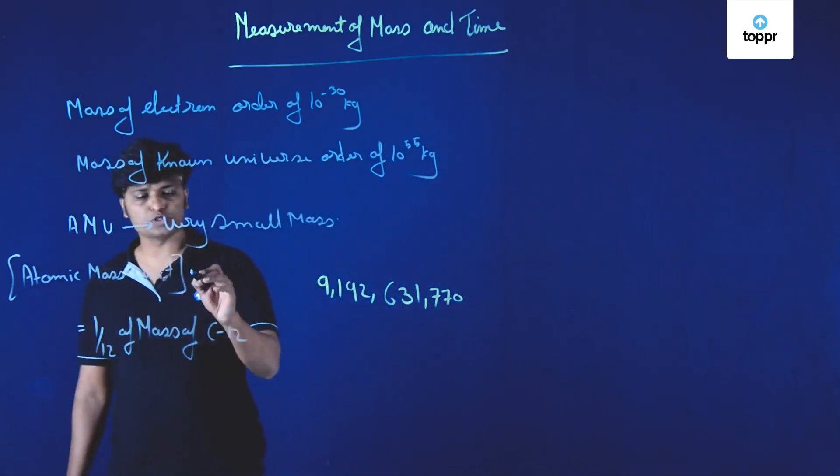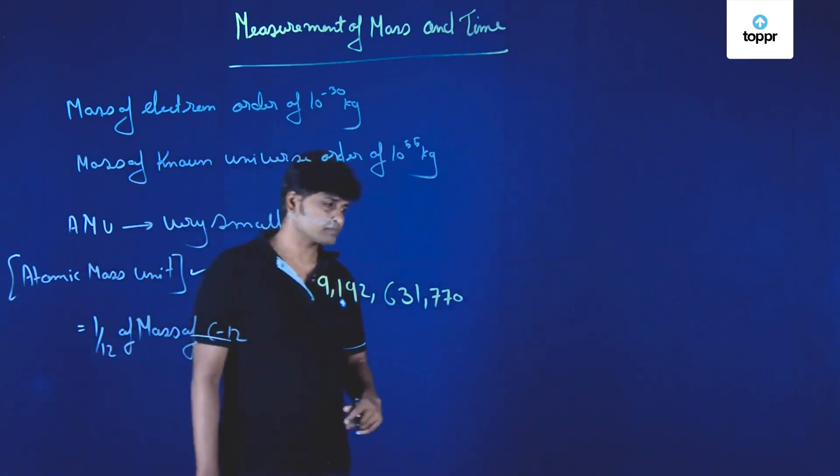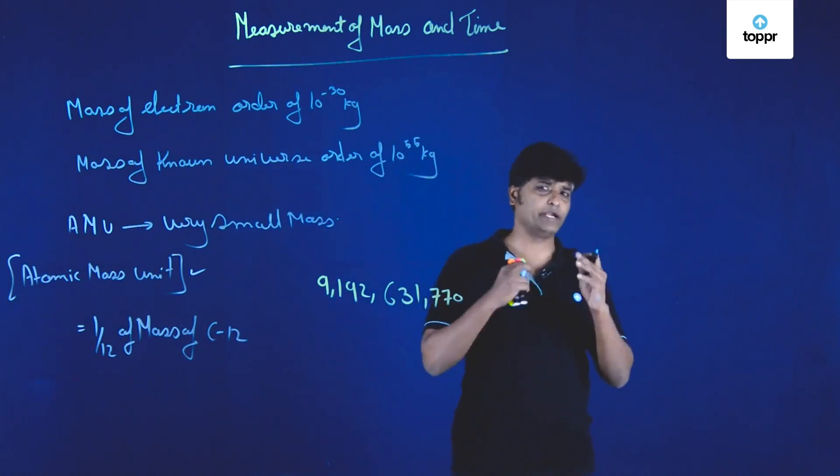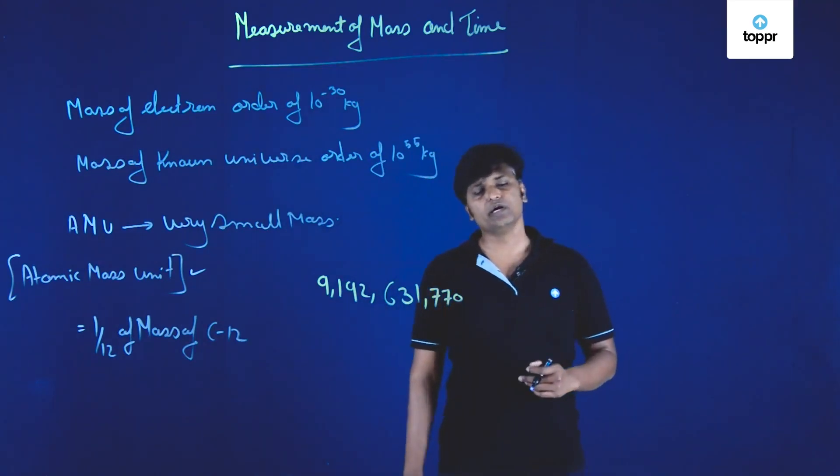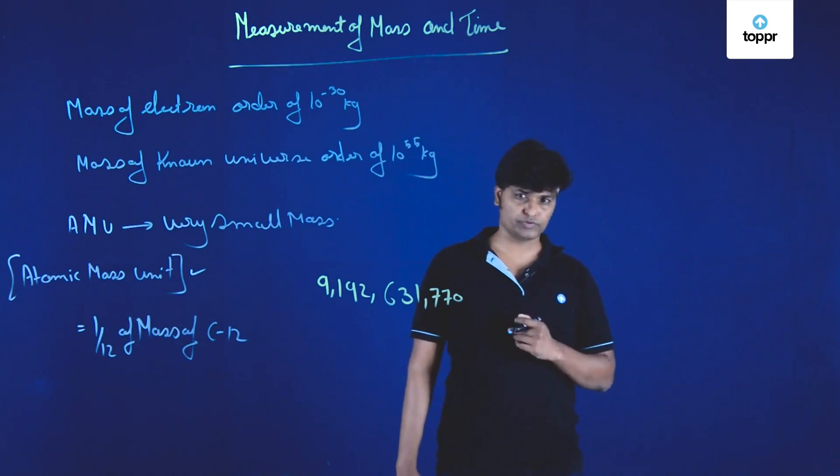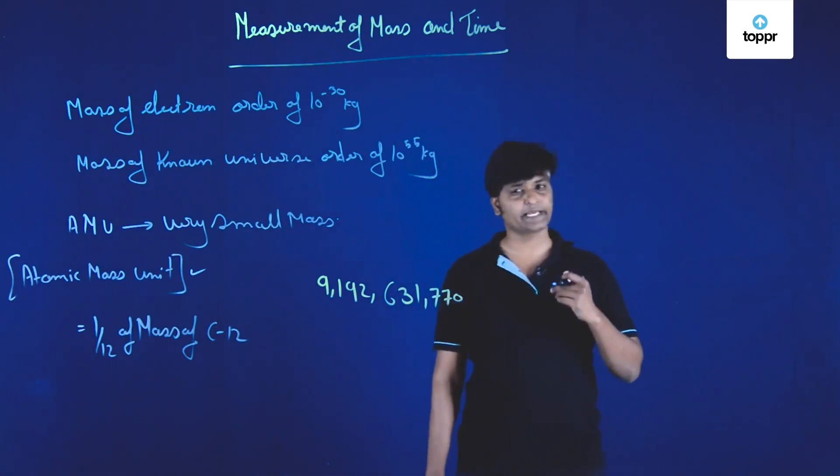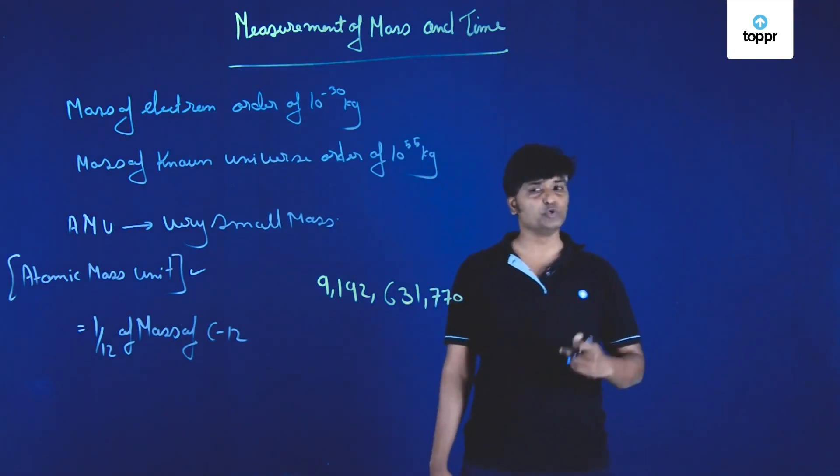Small masses are measured using AMU. Now a very huge mass, for example mass of a planet, can be measured using gravitational force. With the help of Newton's law of gravitation we can calculate the mass of huge planets.